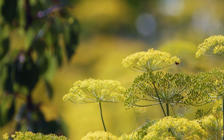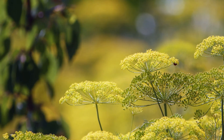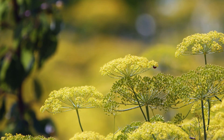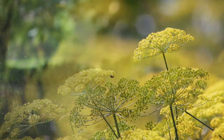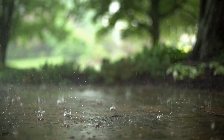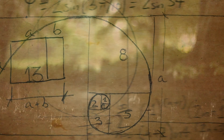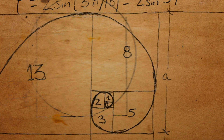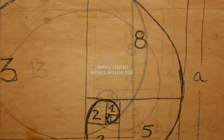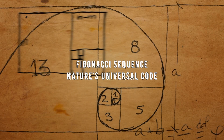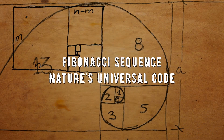Did you know that a simple sequence of numbers can be found all around us, from the spiral patterns of seashells, to the growth patterns of plants, to the proportions of our own bodies? In this video, we're going to explore one of the most fascinating and pervasive mathematical patterns found in nature, the Fibonacci sequence, nature's universal code.